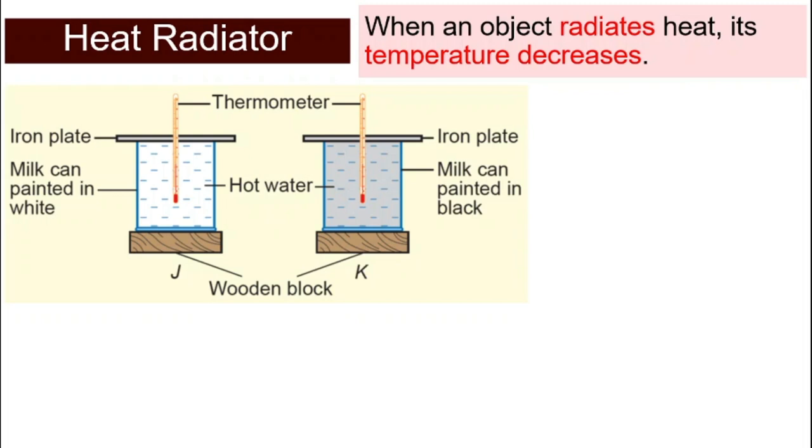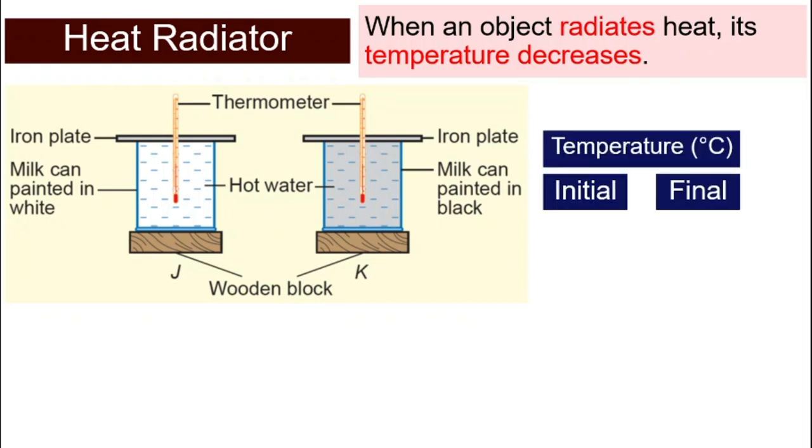So let's look at the setup for this experiment. We use the same milk can. So we have J and K, J milk can painted in white, whereas K will be milk can painted in black. But for this experiment, we will fill both milk cans up with hot water.